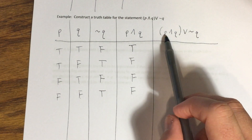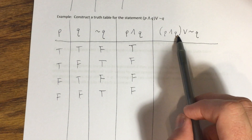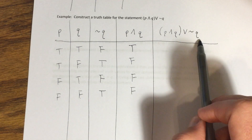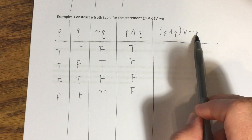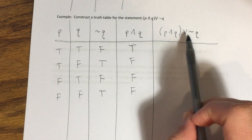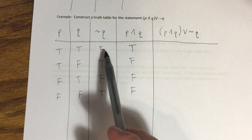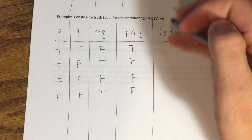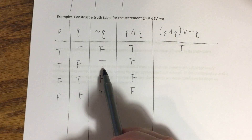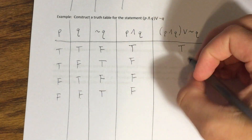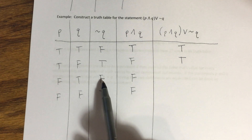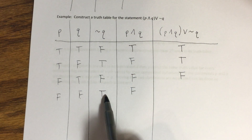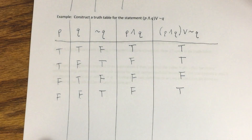For the final column, even though it looks complicated, we've already evaluated the parentheses and the negation — so we're just joining two statements with a disjunction. These correspond to columns four and three. Disjunctions are true anytime at least one component is true. In row one, 'p and q' is true — disjunction is true. In row two, 'not q' is true — true. In row three, both are false — false. In row four, 'not q' is true — true.